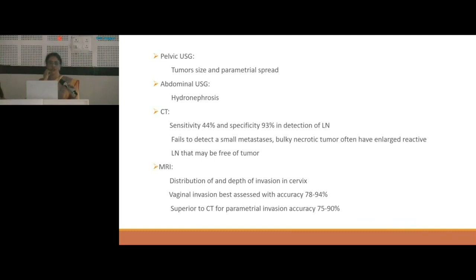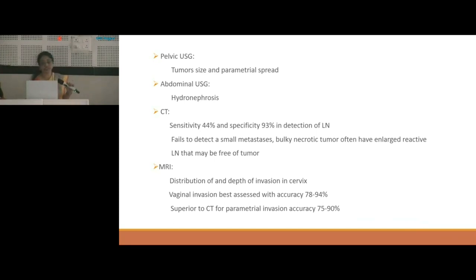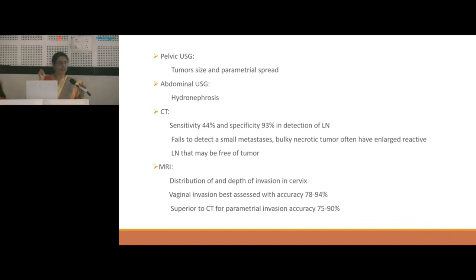Pelvic USG is done to know tumour size and parametrial spread. Abdominal USG helps determine if hydronephrosis is present — because irrespective of the volume or extent of the lesion, if there is hydronephrosis, it straight away goes into stage IIIb. CT is done for each patient: sensitivity is 44% and specificity 93% in detection of lymph node metastasis. However, CT fails to detect small metastasis and may pick up enlarged reactive lymph nodes in bulky necrotic tumours that are actually free of tumour.